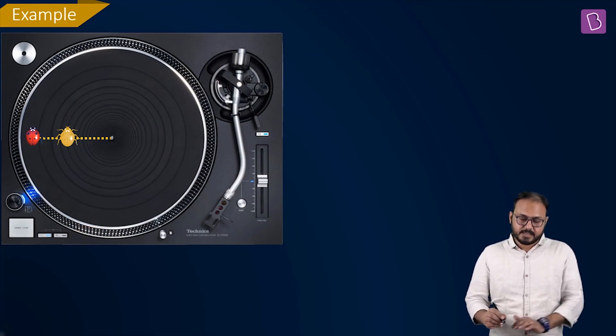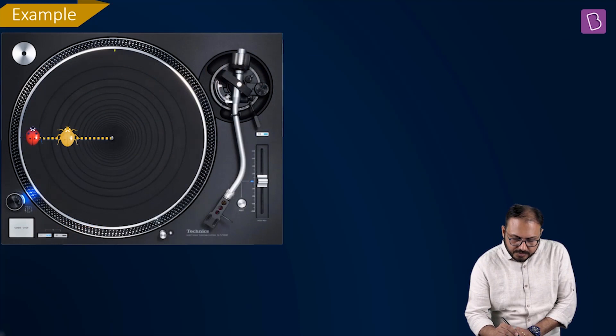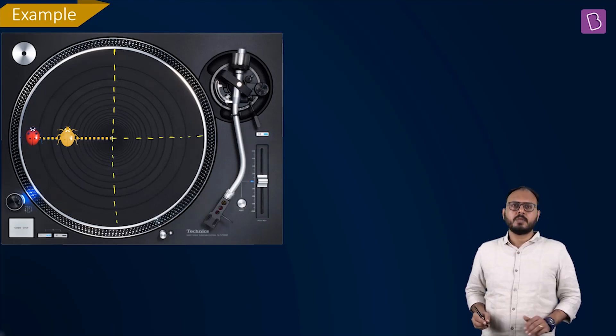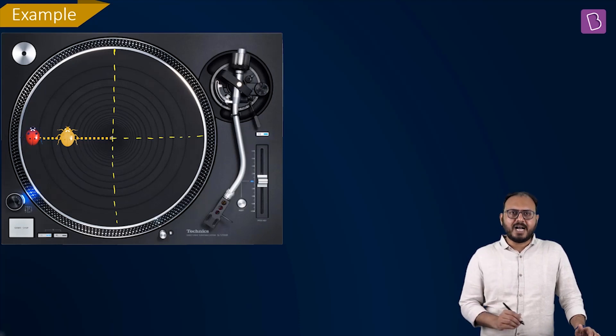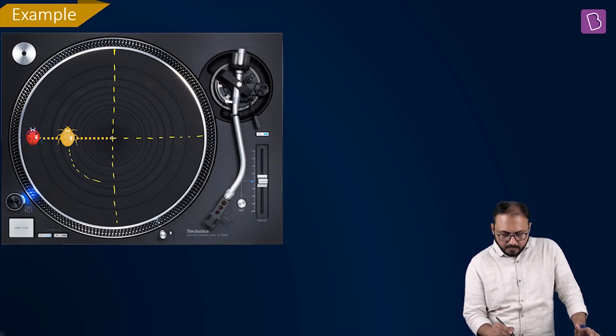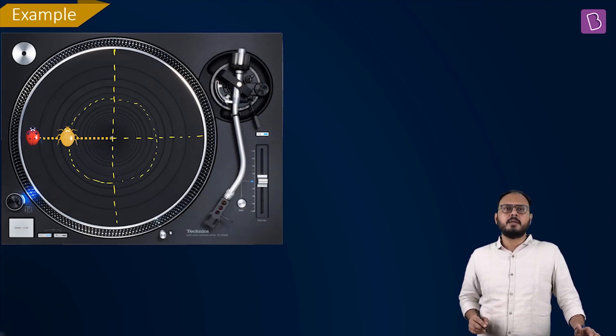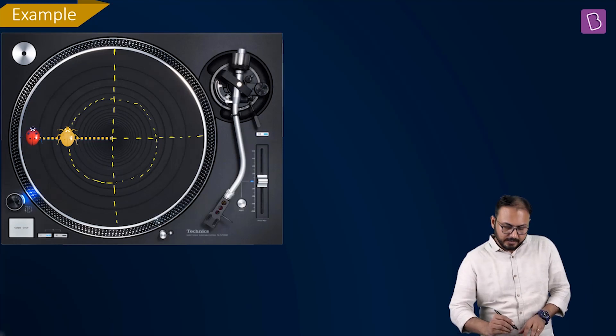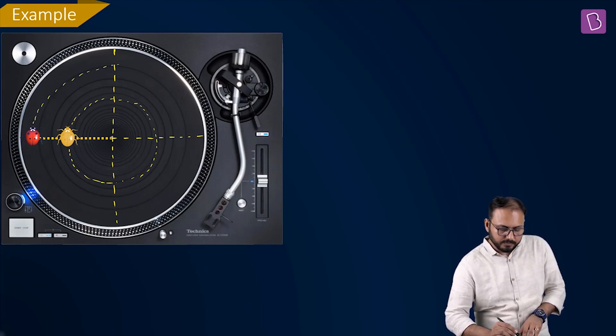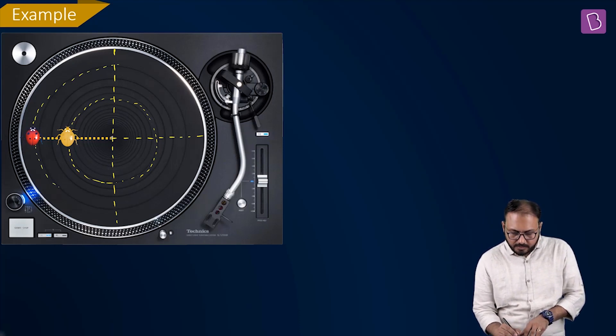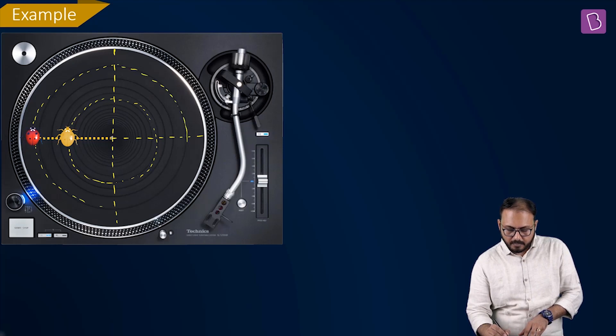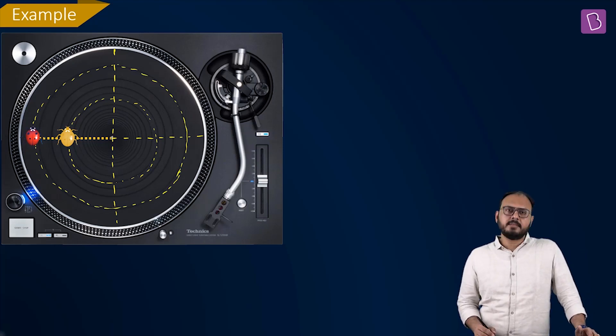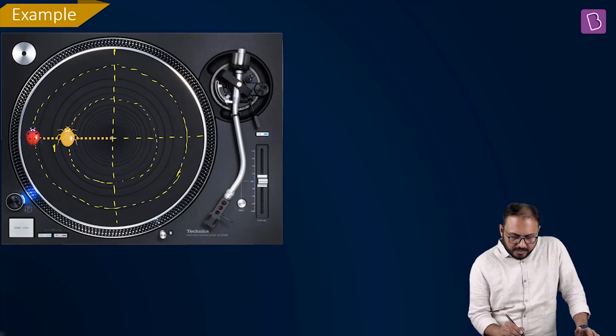The question is, when the disc rotates, let me draw the positions. Can you draw the circle transcribed by the yellow bug? Yes, of course I can draw. This is the circle of the yellow bug. Can you draw the circle of the red bug? Of course I can draw. This is the circle of the red bug. So if I call my yellow bug as 1 and my red as 2...